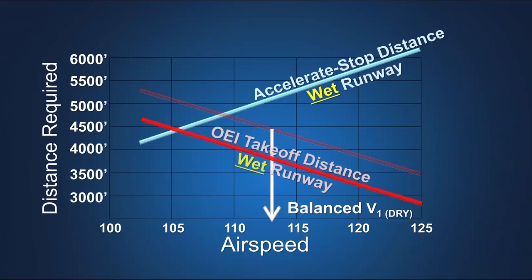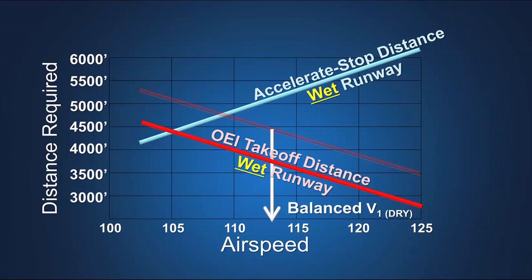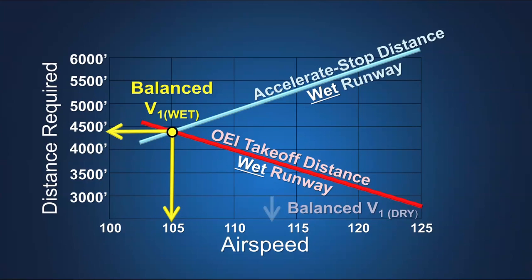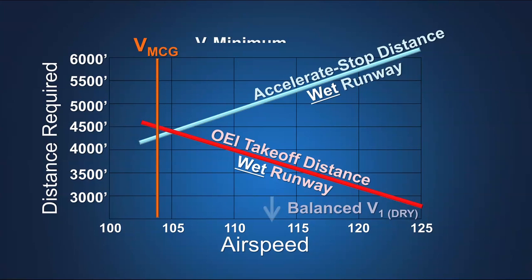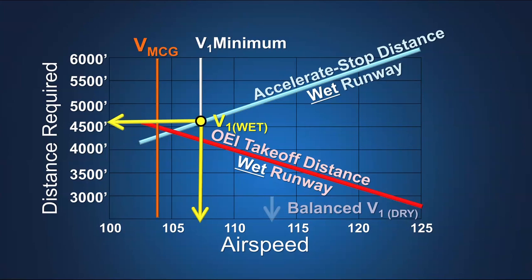Reducing this screen height also reduces the one engine inoperative takeoff distance on a wet runway. The allowance for reverse thrust credit and the use of a 15-foot screen height help the engineers rebalance the takeoff field length required for takeoff on a wet runway through the use of a lower wet runway V1 speed. The ability to reduce V1 speed can be limited by VMCG speed. When V1 speed is limited by VMCG speed, the takeoff on a wet runway will be accelerate stop limited.